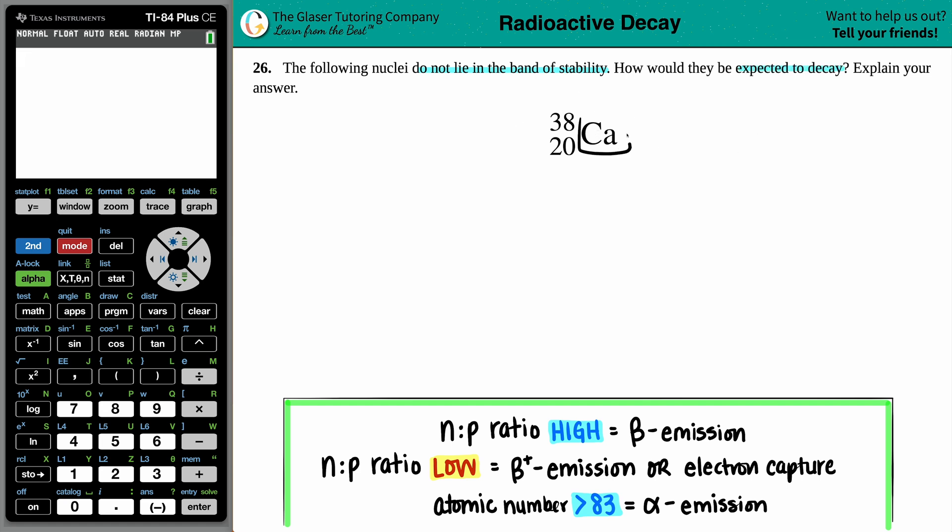Okay, so we got a calcium with a mass number of 38 and an atomic number of 20. Now, we all automatically know that it does not lie in the band of stability, so this has to be classified as an unstable or radioactive material. So we have to figure out how is this guy going to become stable?